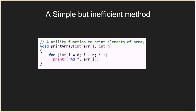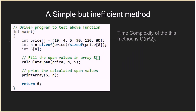There is a utility function print array that simply prints the array using a for loop with printf at each index. In the driver method, we declare the price array, calculate its size, declare a span array of the same size, call the calculate span function, and then print the span array. The time complexity of this brute force method is O(n²), which as noted is an inefficient solution.